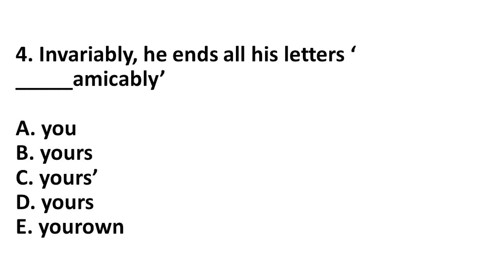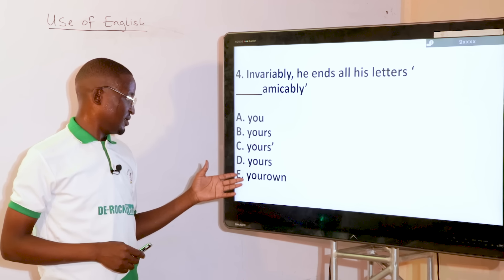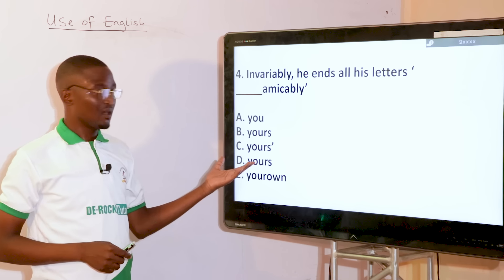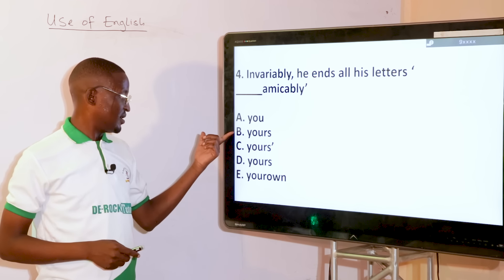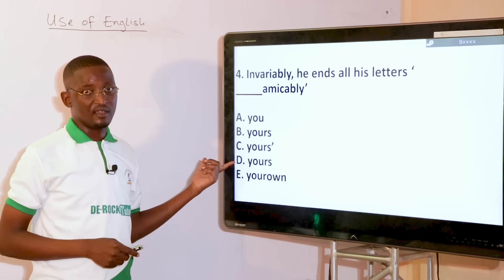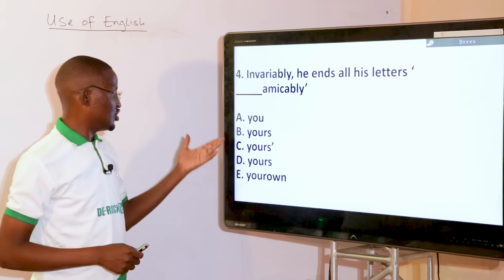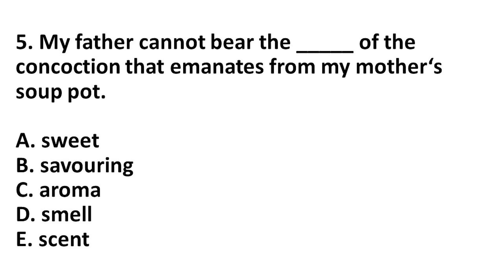He ends all his letters dash amicably. The options are: you, yours with apostrophe, yours, yours, your own. The answer is yours without any apostrophe — the version with an apostrophe is ungrammatical. The answer should be either B or D. Invariably, he ends all his letters yours amicably. You should not have an apostrophe.